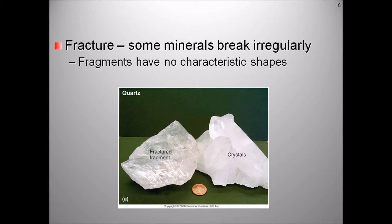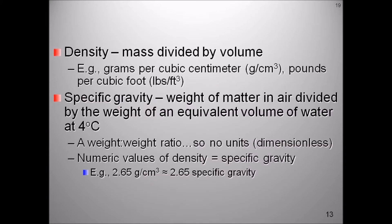Density is a measure of the mass of a material divided by its volume. It is measured in units such as grams per cubic centimeter, kilograms per cubic meter, or pounds per cubic feet. Specific gravity is the density of the material divided by the density of an equivalent volume of water. For example, quartz has a density of 2.65 grams per cubic centimeter, and if you divide by the density of water, one gram per cubic centimeter, then the specific gravity of quartz is 2.65. The units cancel out.